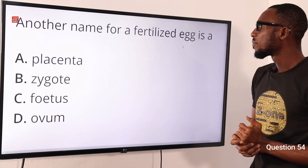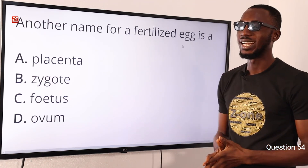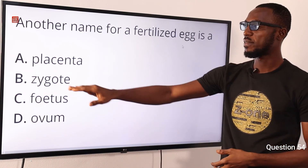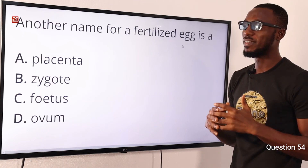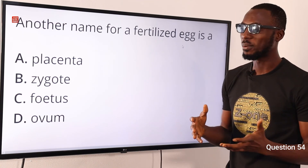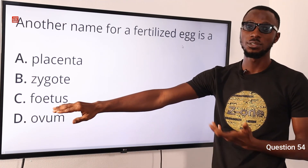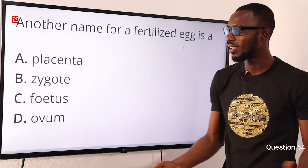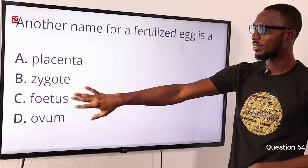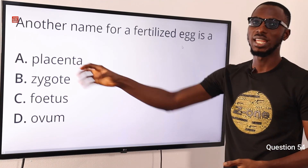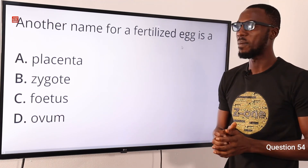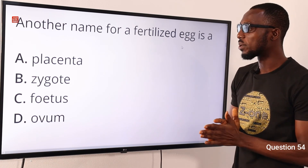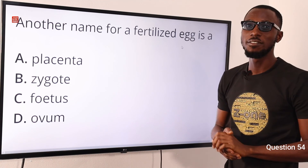Question 54. Another name for a fertilized egg is what? An unfertilized egg or egg cell is referred to as the ovum. The fertilized one — fusion of sperm cell and egg cell — forms the zygote. Once the zygote develops further, you can talk about an embryo, and a further-developed embryo gives rise to the fetus. After the gestation period, the fetus becomes a baby at birth. The placenta is basically where the fetus grows. So the correct option is option B for zygote.